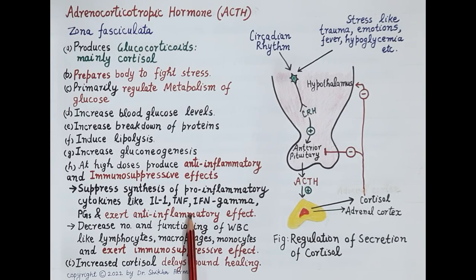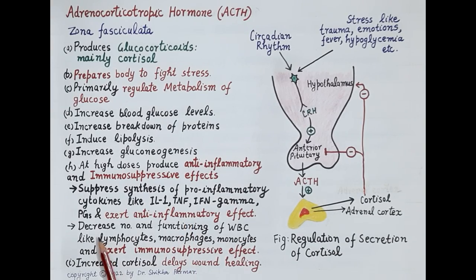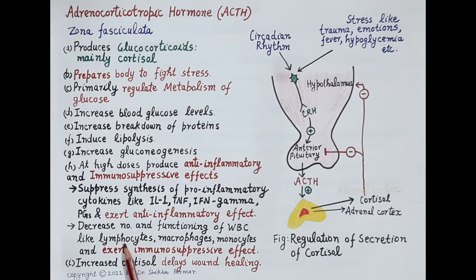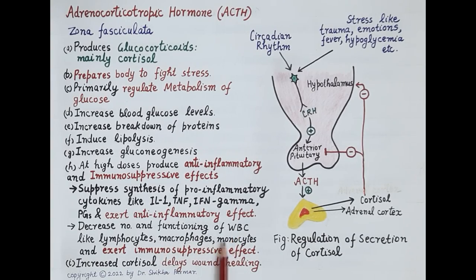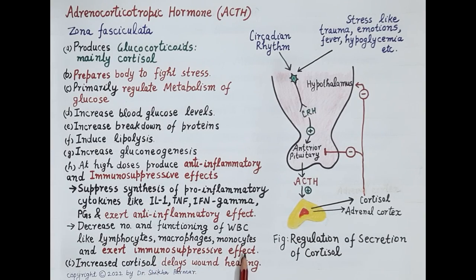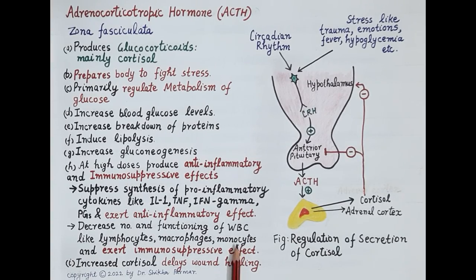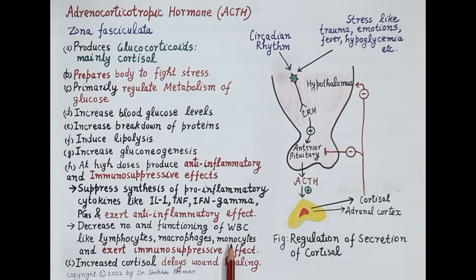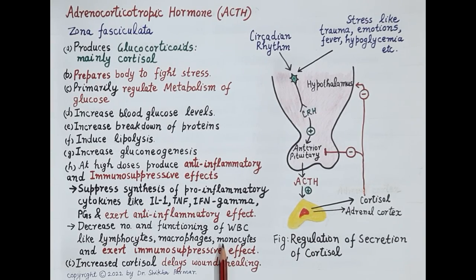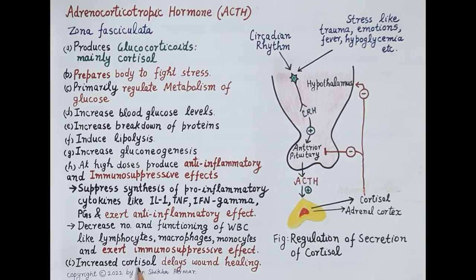In addition to this, glucocorticoids decrease the number and functioning of white blood cells — lymphocytes, macrophages, and monocytes. Since these WBCs produce immunity in the body, suppression of their functioning and activation produces an immunosuppressive effect. Thus prednisone is also used in the management of autoimmune diseases like rheumatoid arthritis. These corticosteroids are also used in organ transplantation.